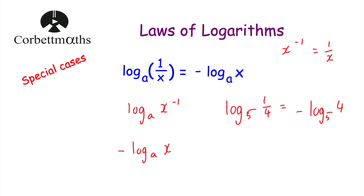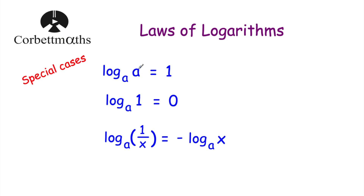So in this video we've looked at three special cases. Log base a of a equals 1 — that makes sense because a to the power of 1 equals a. Log base a of 1 equals 0 — that makes sense because a to the power of 0 equals 1. And finally, log base a of 1 over x equals minus log base a of x — because 1 over x is x to the power of negative 1, and bringing that negative 1 down gives minus log base a of x. So we've looked at some special cases for the laws of logarithms.